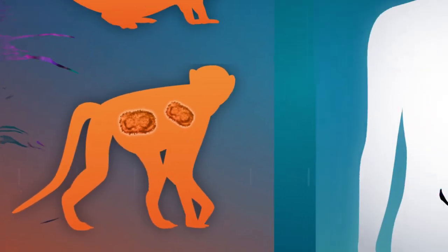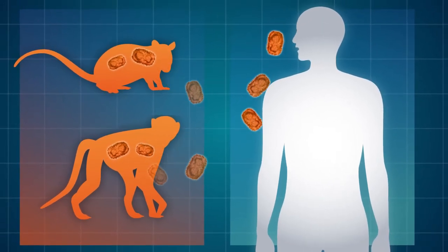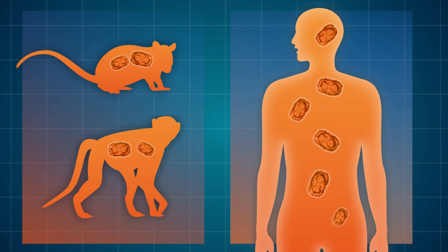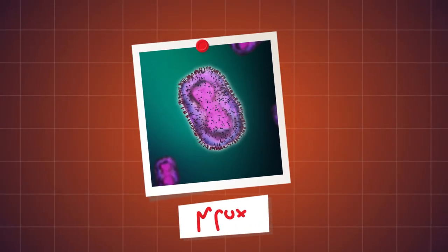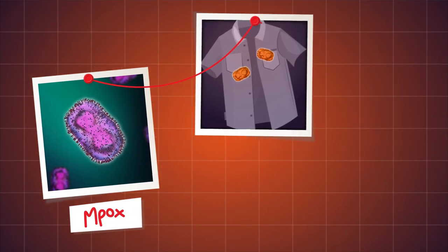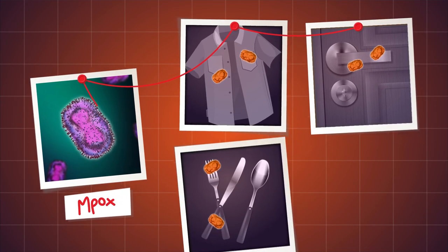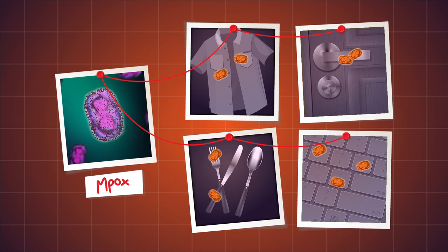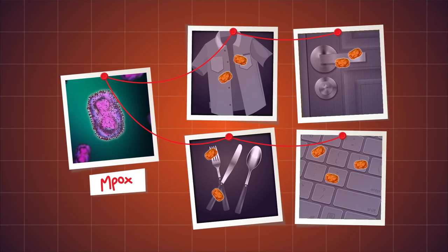It can also be transmitted by infected animals, particularly rodents and primates, or by consuming undercooked meat from infected animals. The virus can even survive on contaminated surfaces, meaning objects like clothing, bed linens, or even door handles can contribute to its spread. But where does this disease actually come from?